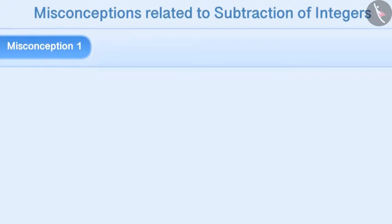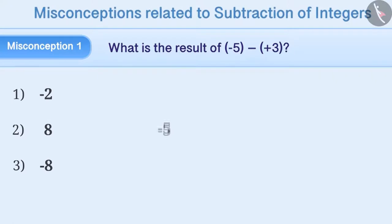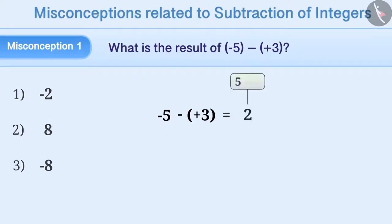Misconception 1. What is the result of minus 5 minus plus 3? While solving minus 5 minus plus 3, sometimes 3 is subtracted from 5. Since 5 is the larger number here, a negative sign is placed before the result.